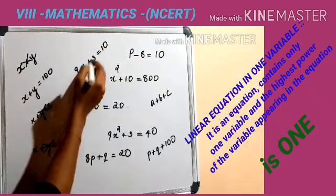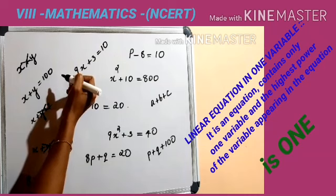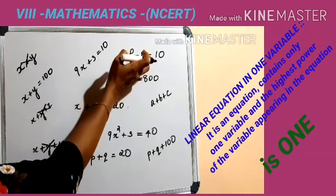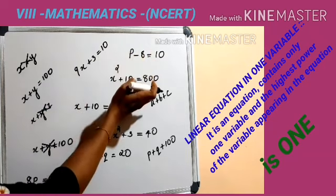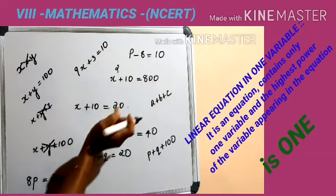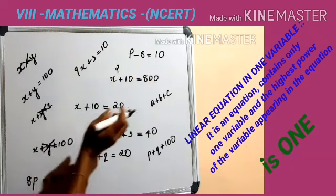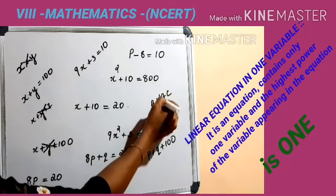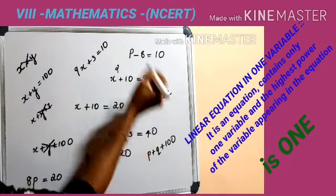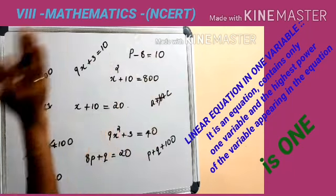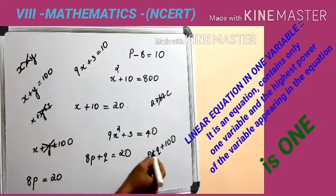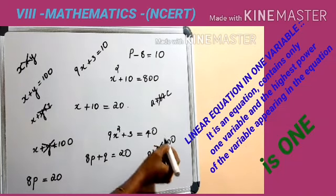What about here? Yes, it is an example for an equation. This is also an equation. Yes, this one is not an equation — we cannot see an equal sign there. This also is not an equation.